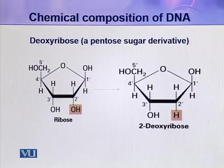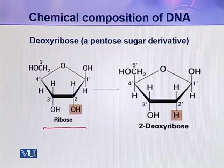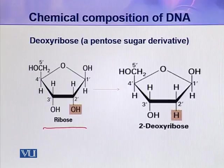Deoxyribose sugar is a pentose sugar derivative — it is derived from ribose sugar. The carbons of this sugar are numbered conventionally with a prime designation added: 1 prime, 2 prime, 3 prime, 4 prime, and 5 prime carbons.